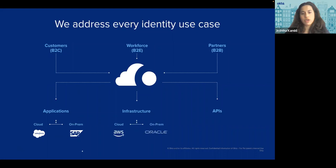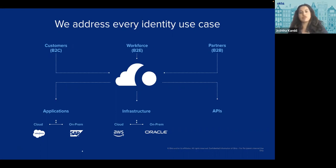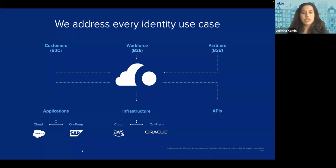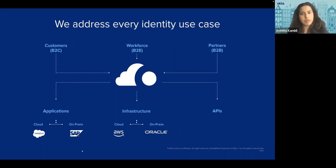Then there is infrastructure. Zero trust is vital for security — trust nothing, then validate and gain trust over the process. We have a product in the PAM space, mainly for resources such as RDP or SSH into Windows or Linux machines, whether on-premises or on cloud like Azure, GCP. You can manage access and do role-based access across these. For example, if you have a production server where you don't want your testing team executing something, you can manage access across those infrastructure servers.